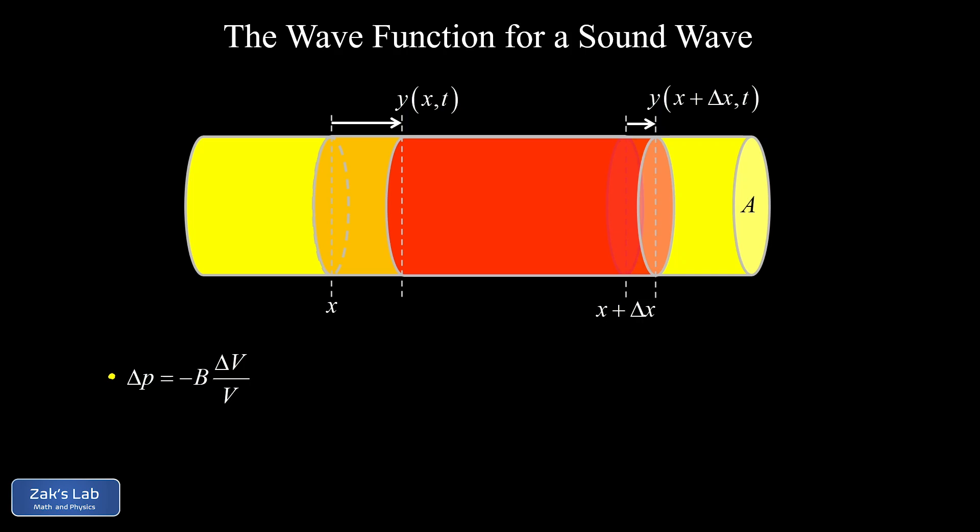The bulk modulus tells us about the compressibility of the medium — in this case, air. The equation tells us how much the pressure will rise when a volume of air is compressed relative to the atmospheric pressure before the sound wave arrived. Our ΔV is a change in length times the cross-sectional area, and the change in length is accounted for by taking the difference of the two y displacements. In the denominator we have the original volume of that cylinder of air molecules, which is the cross-sectional area times the original length Δx. The cross-sectional areas cancel out.